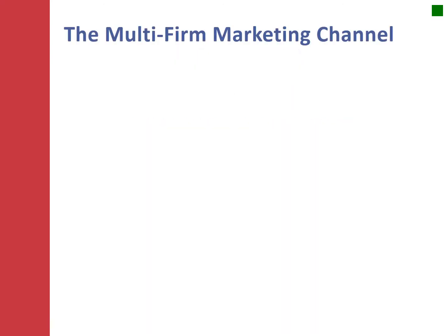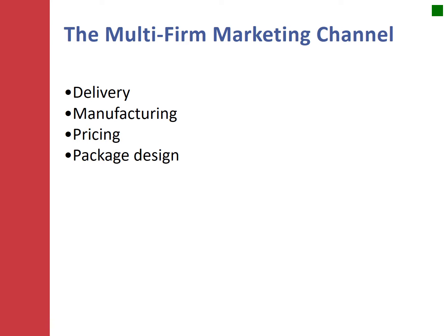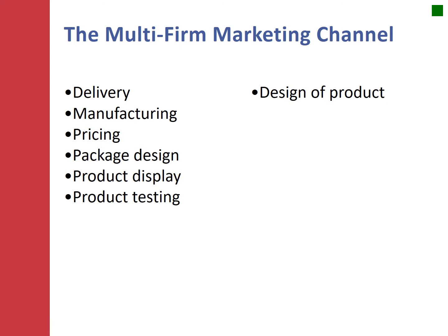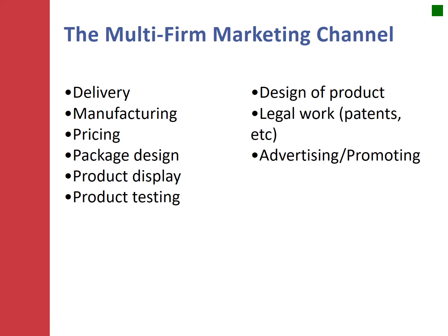Let's talk a little bit about what multi-firm marketing means and what a channel is all about. What I'd like you to do is think about all the different activities that need to be done in order for a product to come to market. Think about everything that would be involved from the raw material stage to actually producing the product, delivering the product, and getting it sold.